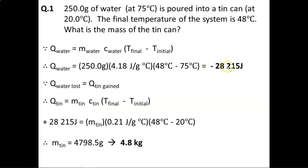Alright, so negative 28215 joules of energy lost by the water is now gained, so it is a positive value for the tin. The mass of the tin is what we are trying to calculate. 0.21 joules per gram degree Celsius is the heat capacity of tin. It is not given in the question itself, you would have to look it up in a table or it would be given to you on a test.